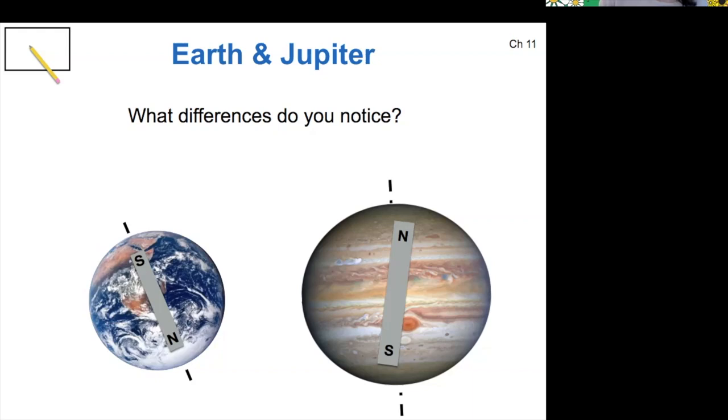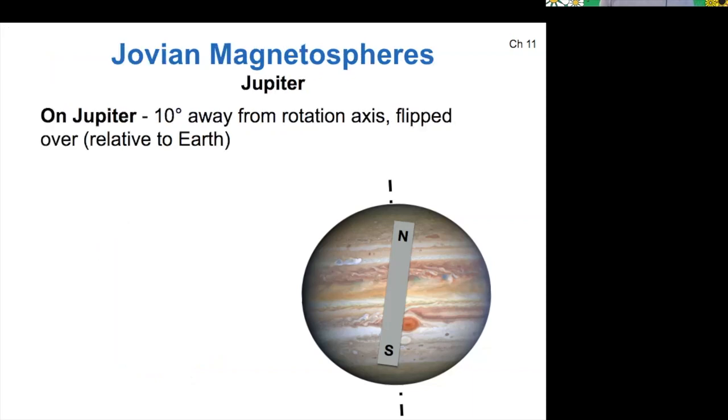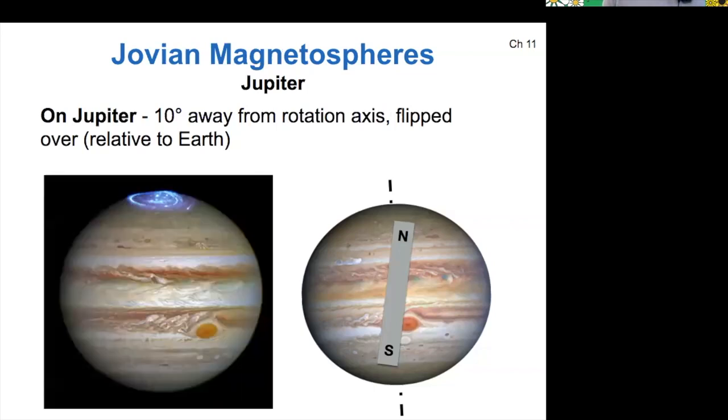Good observations. On Jupiter, that tilt is actually about 10 degrees. And like I mentioned before, it generates aurora around its north and south poles.